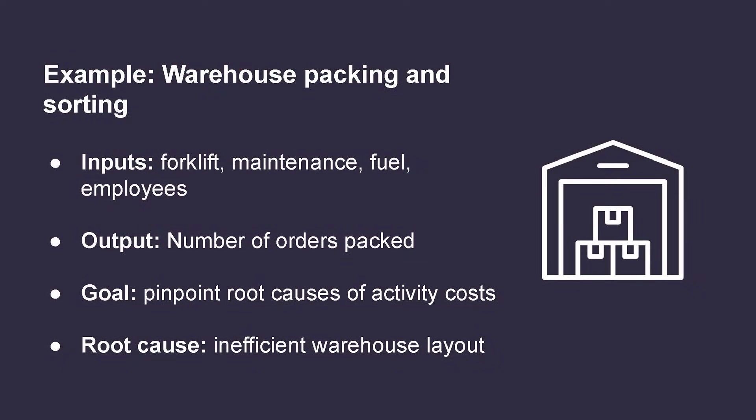For example, if the activity is packing and sorting orders at a warehouse, the inputs could be the forklift, the maintenance and fuel for the forklift, the employees such as the forklift driver, and the laborers that sort and pack the order for shipping. The output here would be the number of orders packed. The goal is to pinpoint the factors that are the root causes of the activity costs. In our example, the root cause of the order packing costs might be attributed to the inefficient layout of the warehouse.